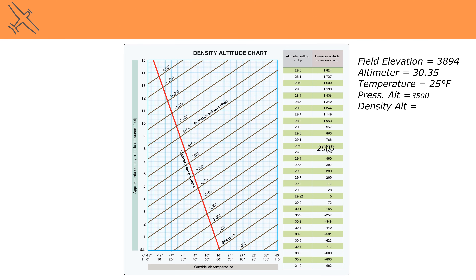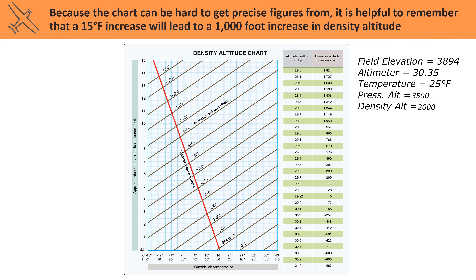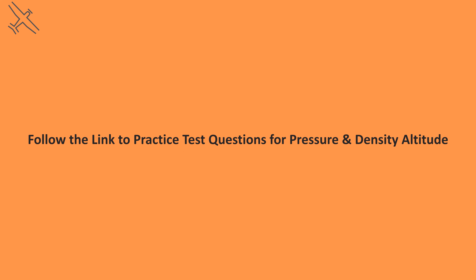These charts can be very difficult to read, even using the straight edge you'll have with you on test day. So it might be helpful to remember that a 15 degree Fahrenheit increase will lead to about a 1,000 foot increase in density altitude. This is helpful if you have trouble reading exact figures off these charts.